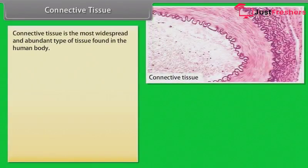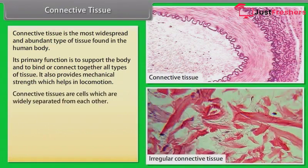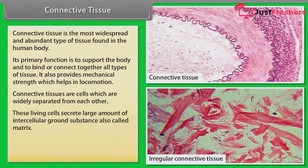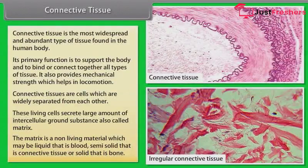Connective tissue is the most widespread and abundant type of tissue found in the human body. Its primary function is to support the body and to bind or connect together all types of tissues. It also provides mechanical strength which helps in locomotion. Connective tissue cells are widely separated from each other, and these living cells secrete large amounts of intercellular ground substance, also called matrix. The matrix may be liquid (blood), semi-solid (connective tissue), or solid (bone).